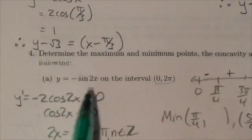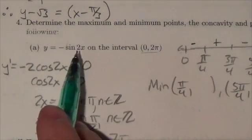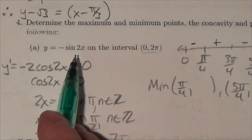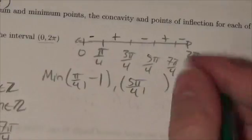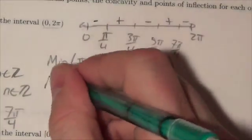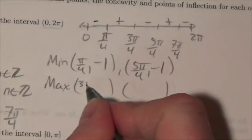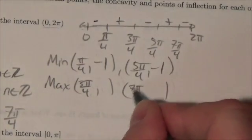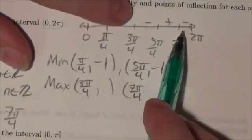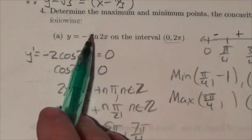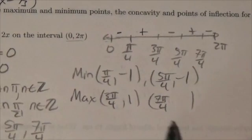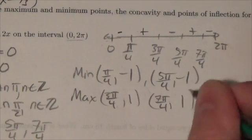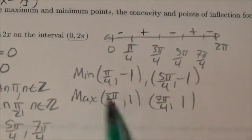To find the y-values, I go back to the original expression, negative sine of 2x. Plugging in π/4: 2 times π/4 is π/2, sine of π/2 is 1, and the negative makes it −1. The exact same thing happens with 5π/4: the angle is 5π/2, sine of that is 1, the negative makes it −1. So my minimums are (π/4, −1) and (5π/4, −1). My maximums occur at 3π/4 and 7π/4, where I'm increasing prior and decreasing afterwards. Plugging in 3π/4: 2 times 3π/4 is 3π/2, sine of 3π/2 is −1, and the negative makes it +1. The same happens with 7π/4, giving positive 1. So my maximums are (3π/4, 1) and (7π/4, 1).